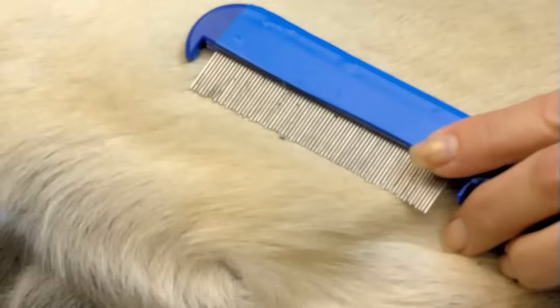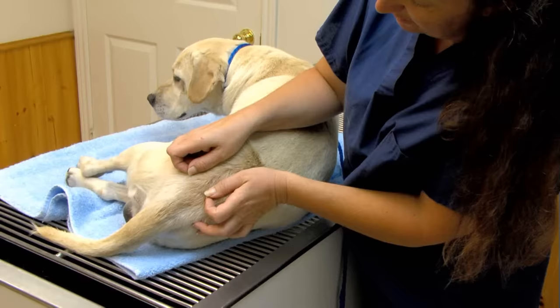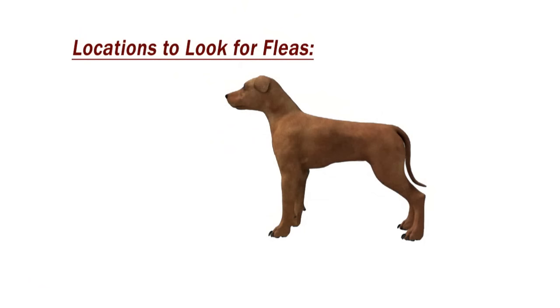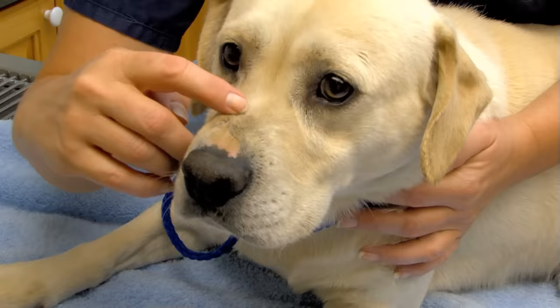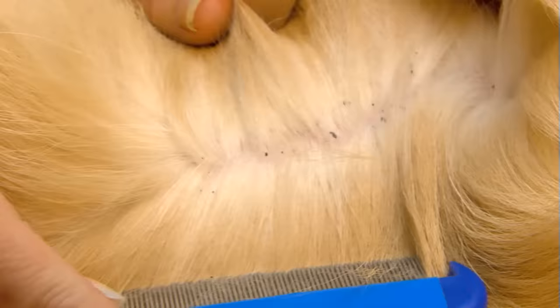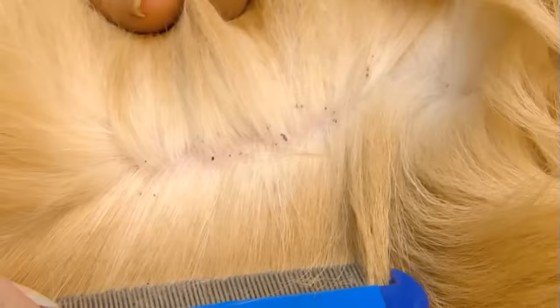Even spotting the adult flea requires a close and thorough examination of the skin. There are certain locations on the pet where fleas more commonly congregate, and focusing your search in these locations increases your chances that fleas will be found. The key locations on most dogs and cats would be the tail area, head and neck, and the belly. These areas should always be evaluated when assessing the pet for the presence of fleas.